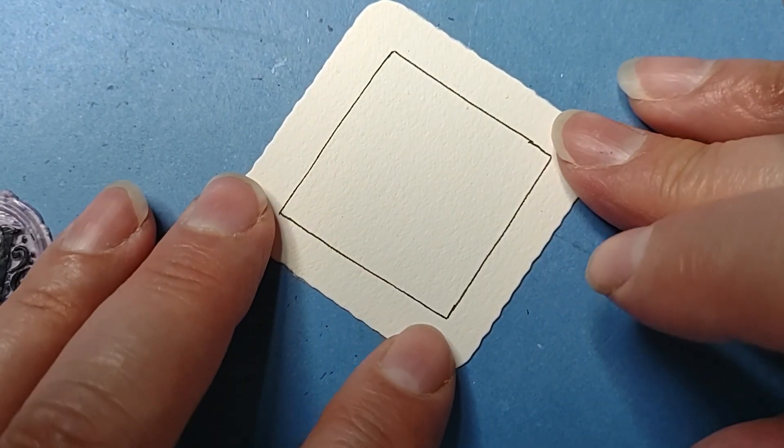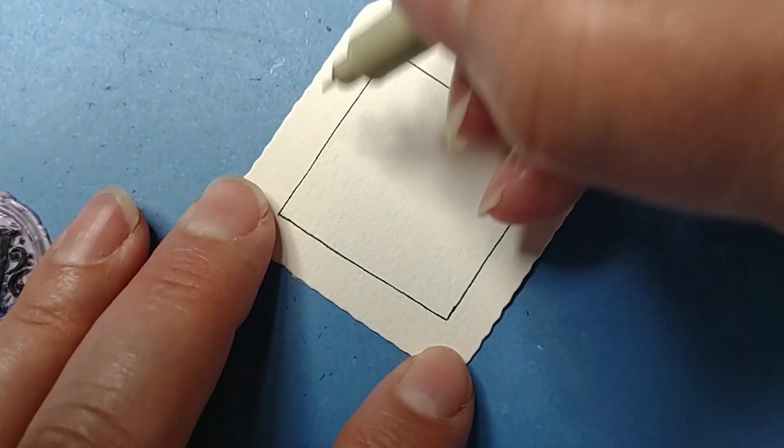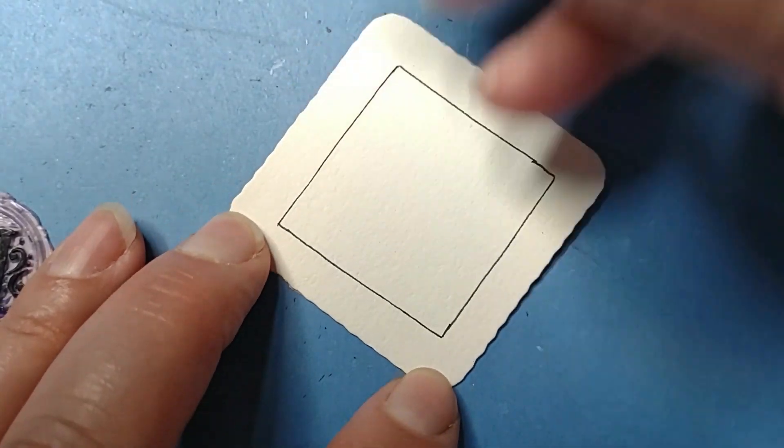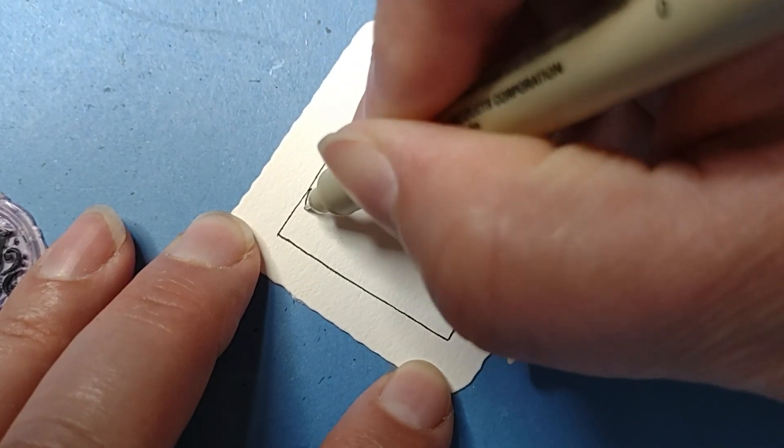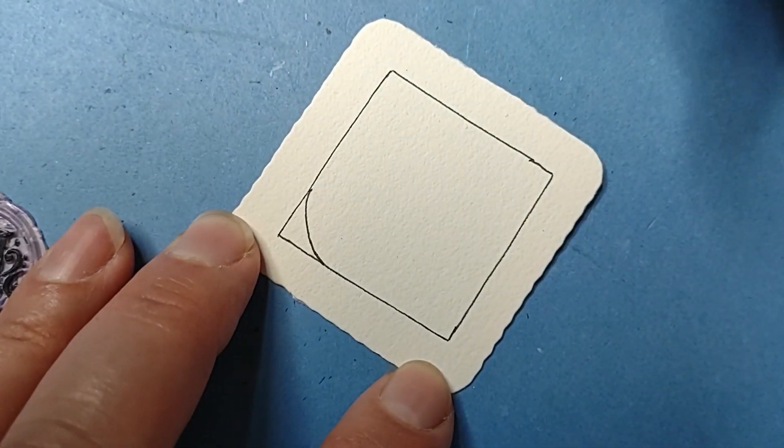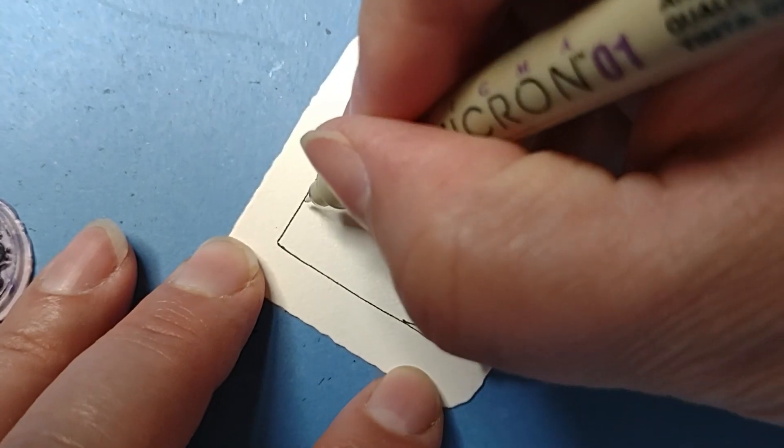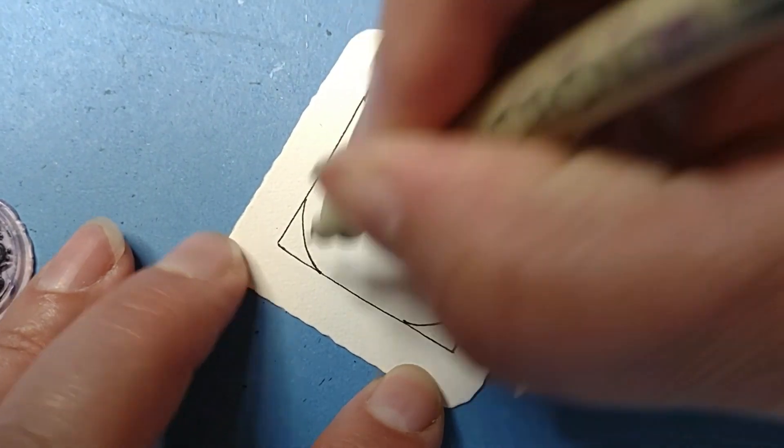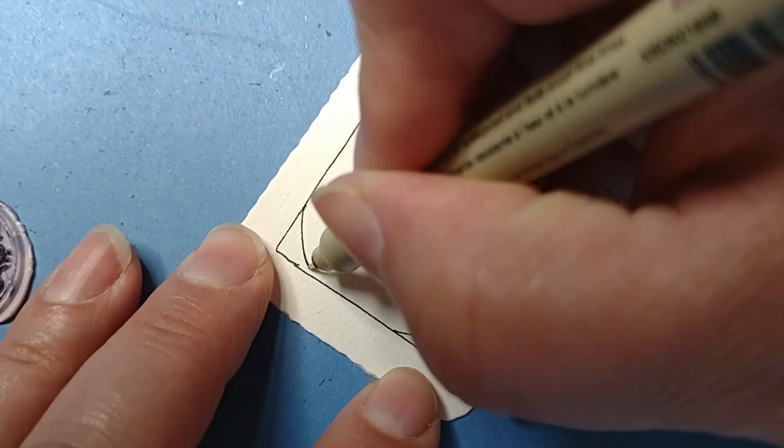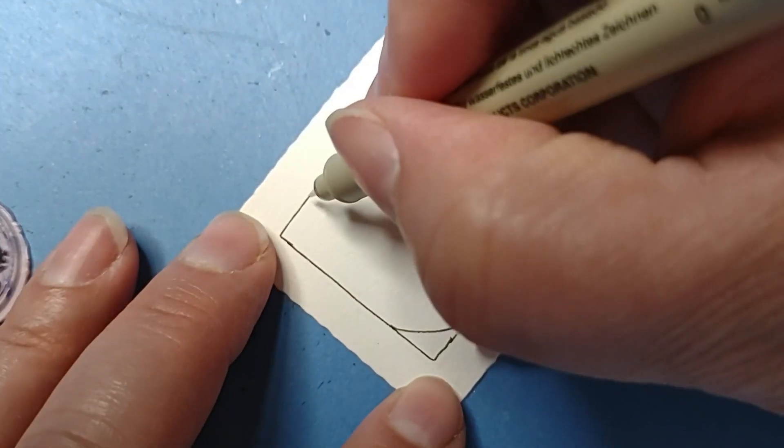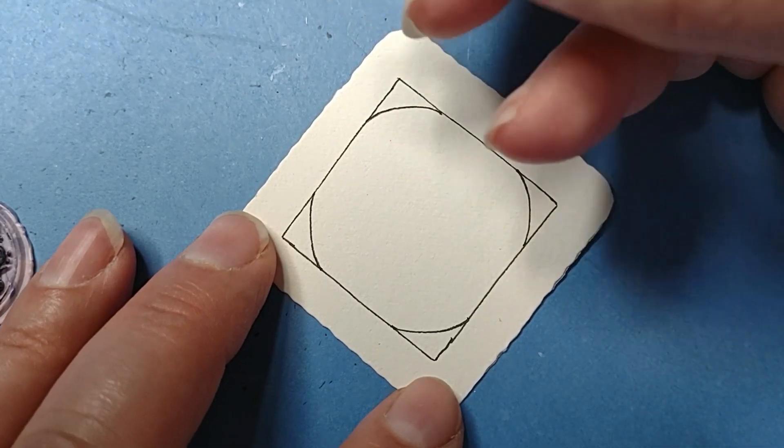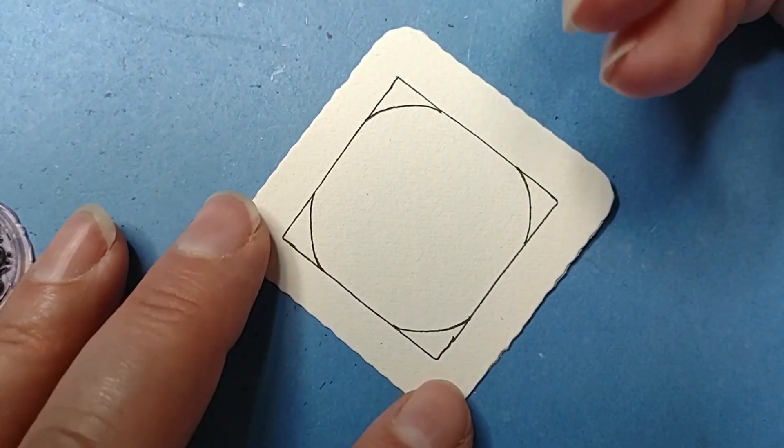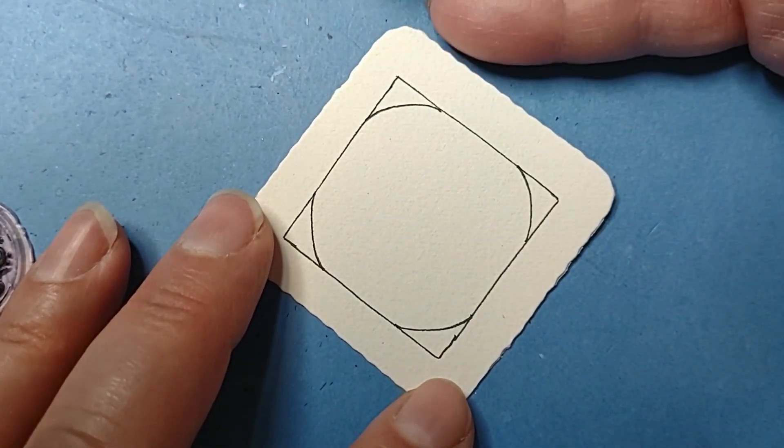First step is we're going to round off these corners. As you do it you can kind of see how far you want to go. Just anything with this, try it a few times and then you'll find how you want to do it.